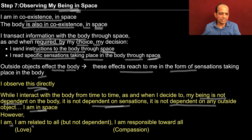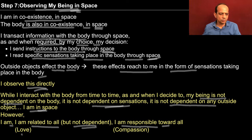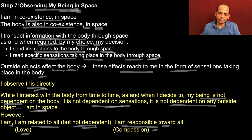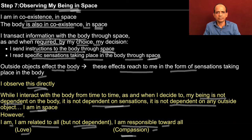I am related to all but not dependent. Similarly, I am responsible toward all but not dependent. When I am able to see that through space I am related to each and every entity — every human being, each and every entity in nature — this is the feeling of love. And with this feeling of love, I am able to see my participation, my responsibility towards all. And this is compassion. Being able to see the coexistence and the submergence is to see the truth, and with that I am able to see the feeling of love and compassion inside me. This is awakening to the higher level activities of the self, and this is what we are working for.